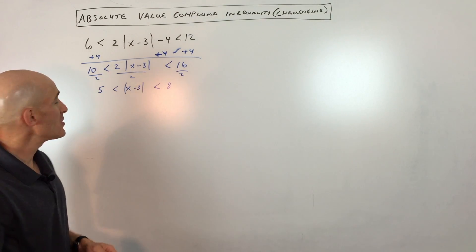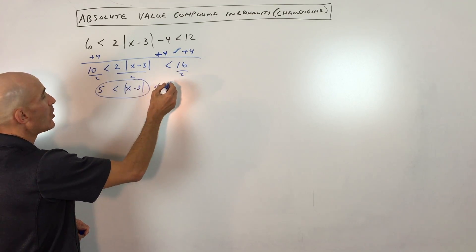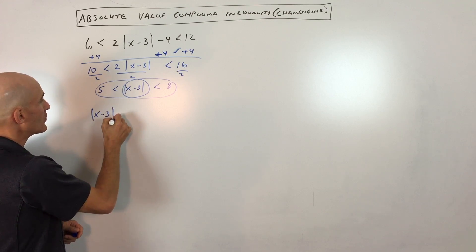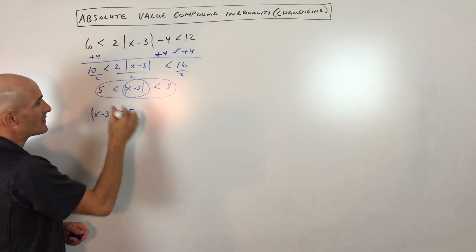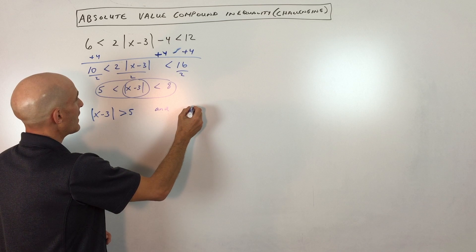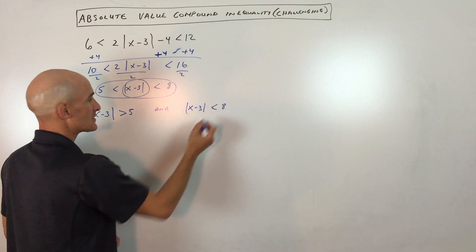Now what we're going to do here is we're actually going to split this up into two inequalities. So what we have is we have x minus 3, the absolute value of, is greater than 5. Notice I flipped it over, the inequality. And we have x minus 3, the absolute value of that, is less than 8.